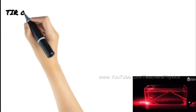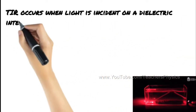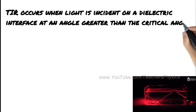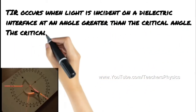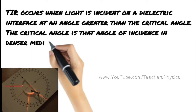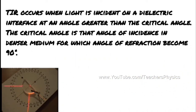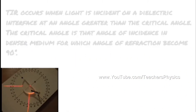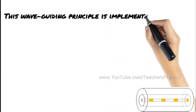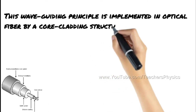Total internal reflection occurs when light is incident on a dielectric interface at an angle greater than the critical angle. The critical angle is that angle of incidence in the denser medium for which the angle of refraction becomes 90 degrees. This waveguiding principle is implemented in optical fiber by a core-cladding structure.